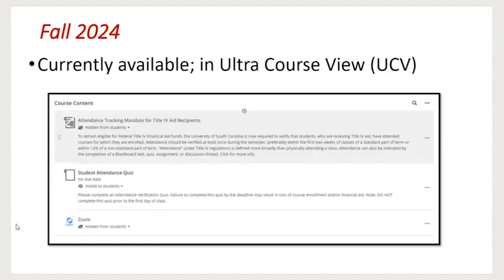As of today, fall 2024 courses are now available in Blackboard and they are in the Ultra Course View. So your fall 2024 courses are available and they are in the Ultra Course View.